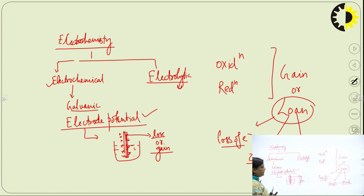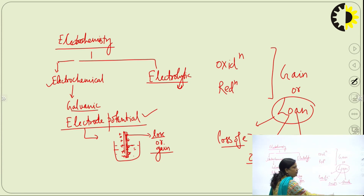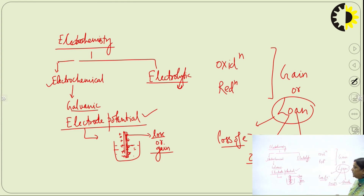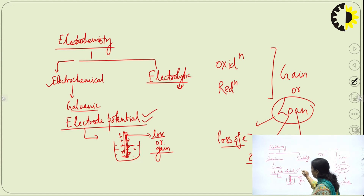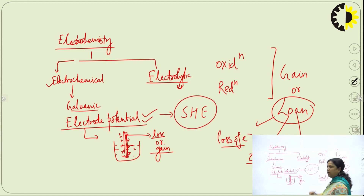If the potential is due to loss of electrons, it is called oxidation potential. If it is due to gain of electrons, it is called reduction potential. To calculate this electrode potential, a reference electrode is preferred, which is called the Standard Hydrogen Electrode (SHE).